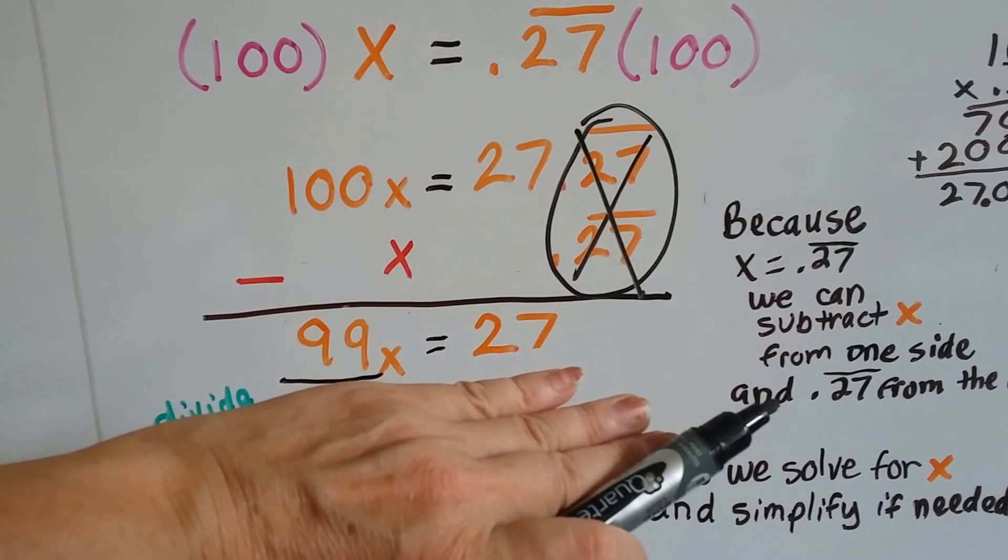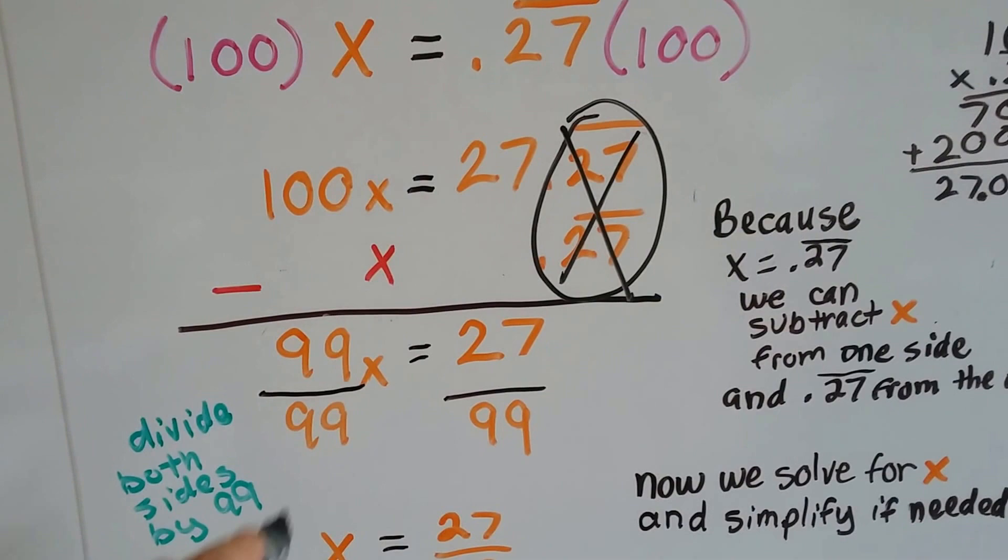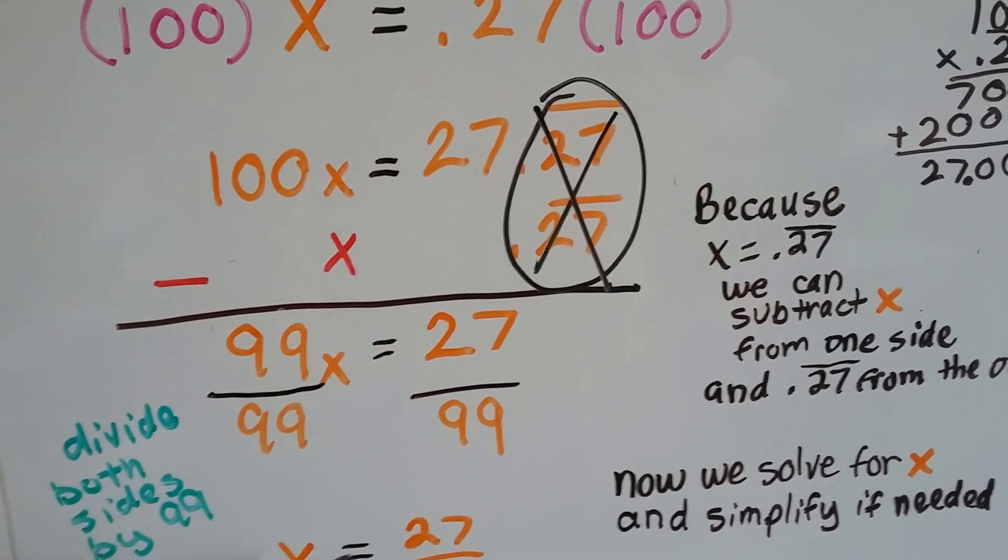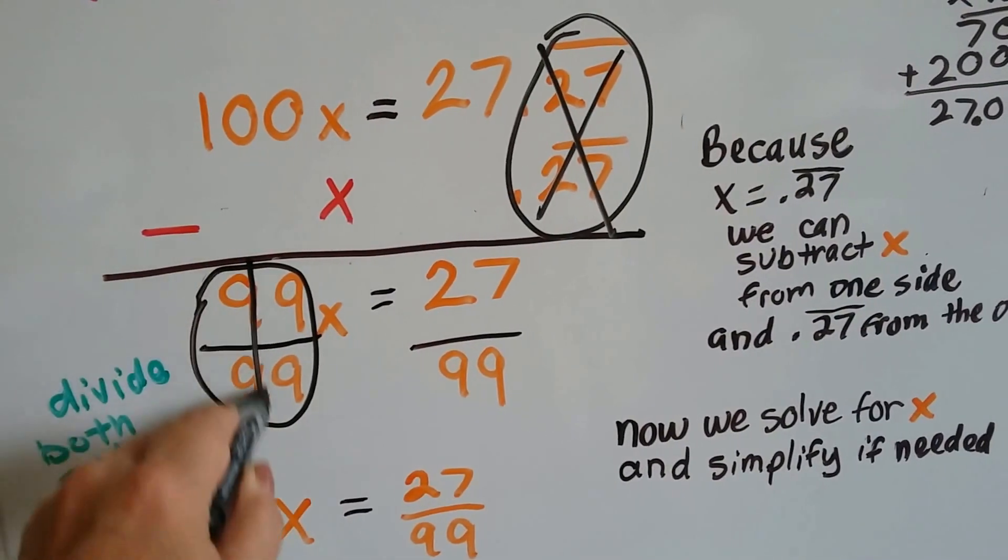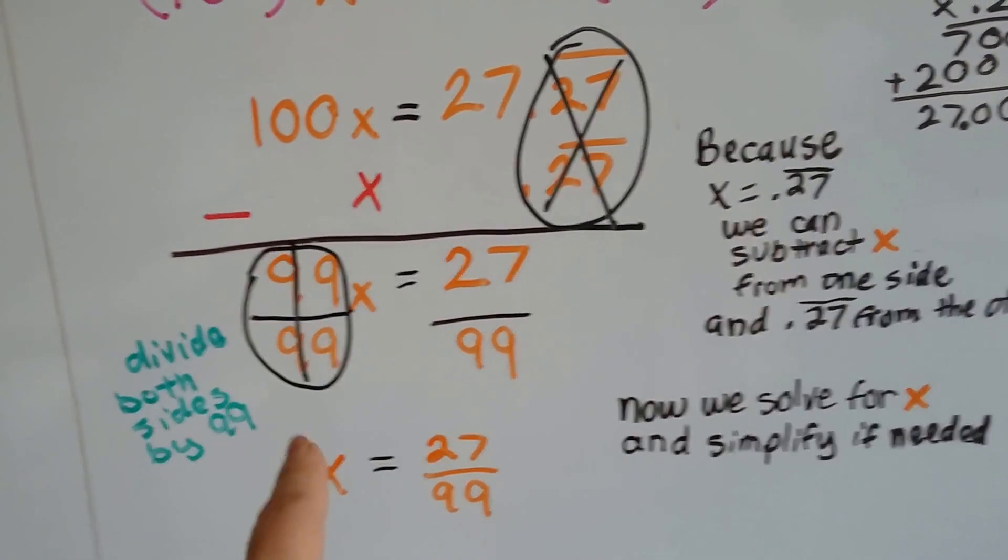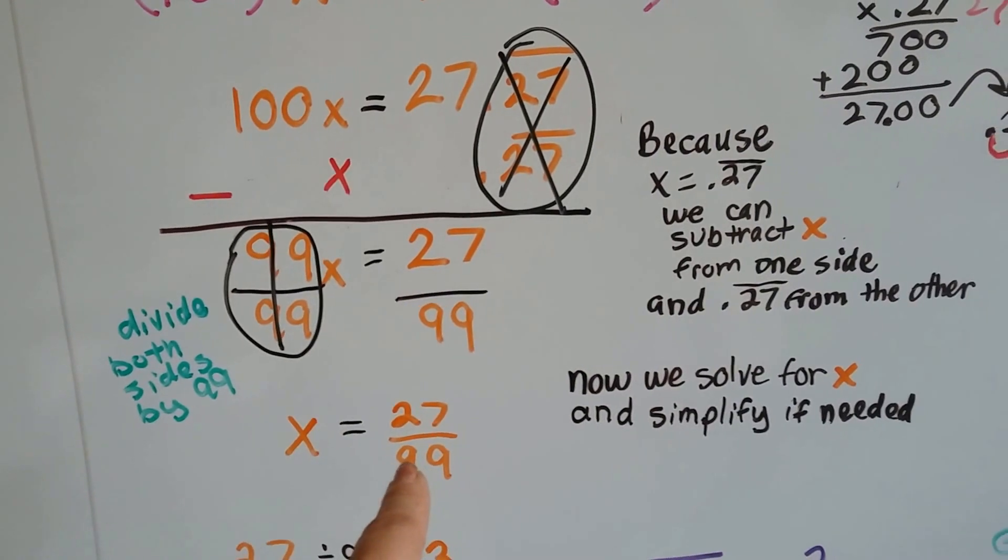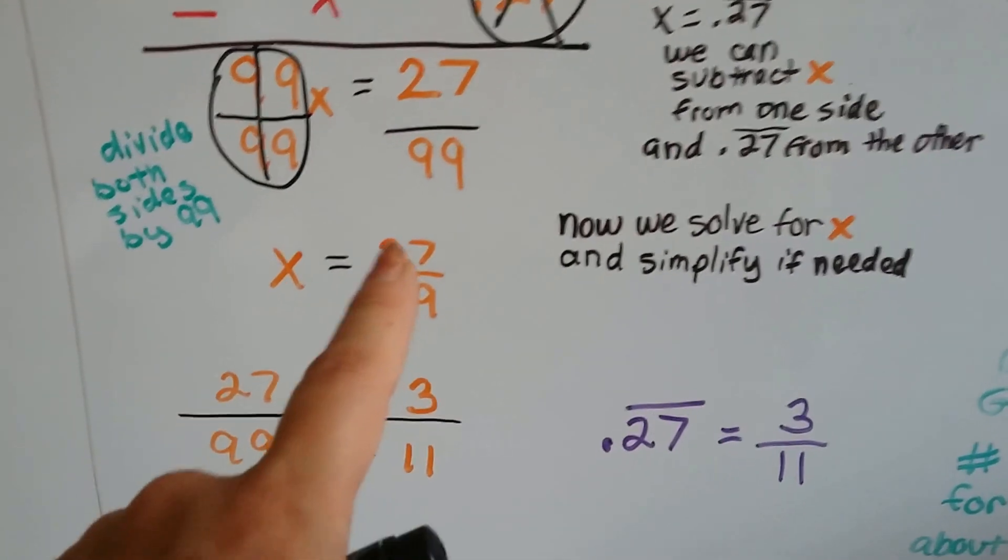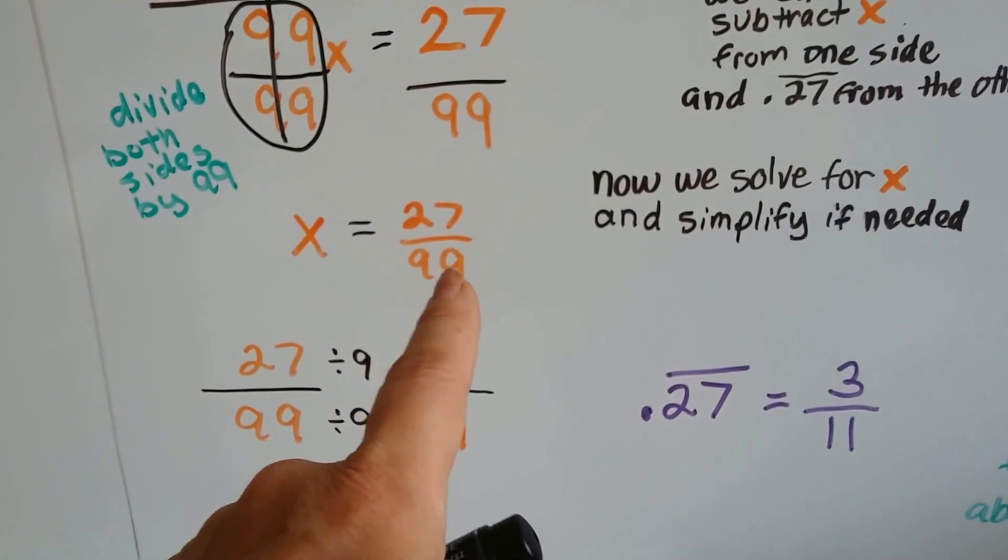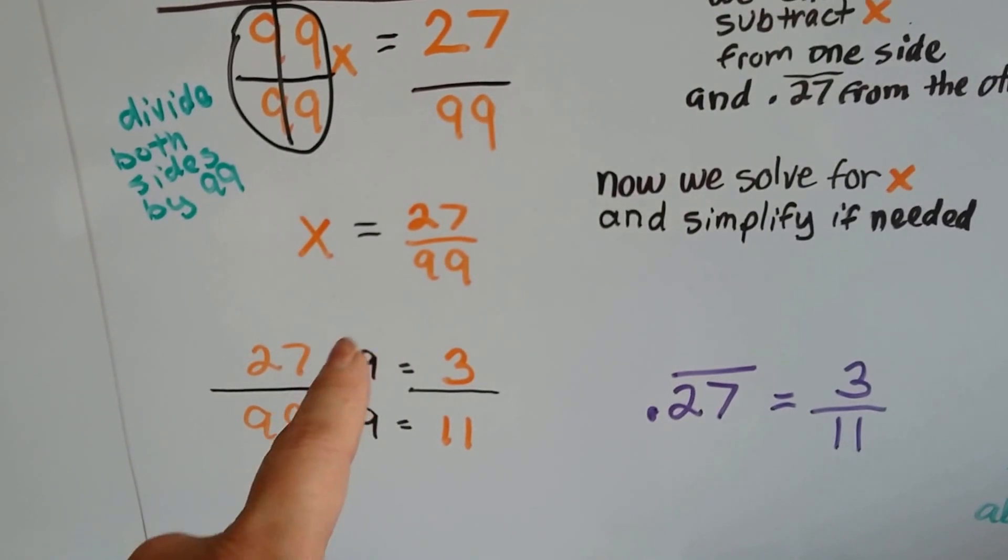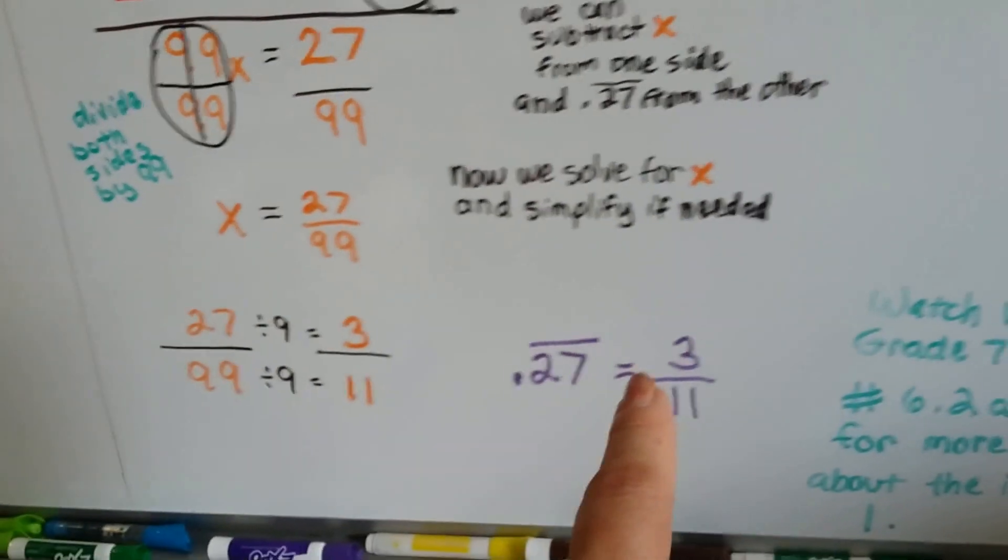So, to isolate that x to one side, we divide both sides by 99. Do you remember from last year? So, we divide this side by 99 and this side by 99. Well, when the numerator and denominator are the same, it creates a 1, doesn't it? That makes our invisible 1, our famous invisible 1 we talked about last year. So, now we've got x is equal to 27 over 99. So, now we just simplify it. And it looks to me like 9 can go into both because I know 3 times 9 is 27 and 99 is 9 times 11. So, we divide the numerator and denominator by 9 and we get 3 elevenths. So, .27 that repeats is equal to 3 elevenths.